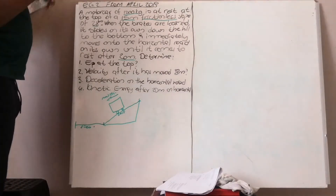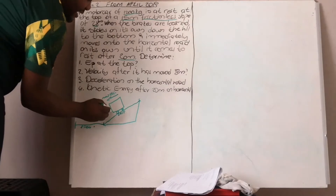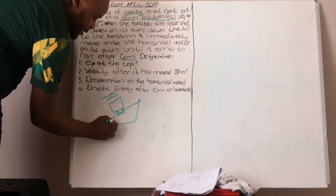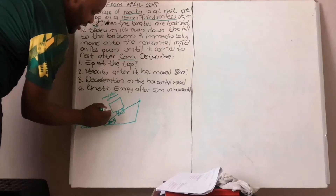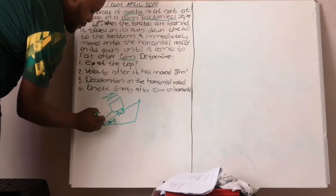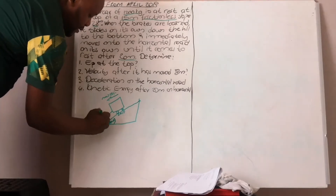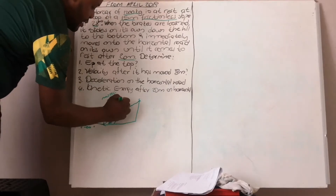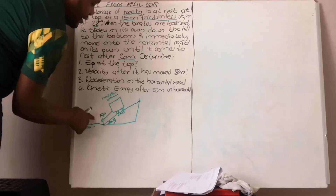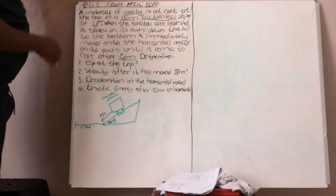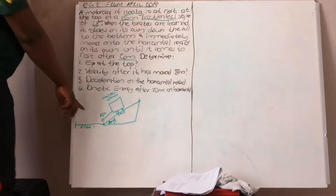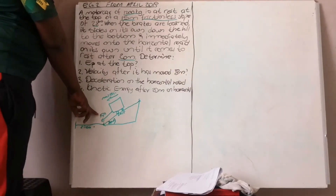Since the object is on an inclined plane, the angle is 28 degrees. When it moves, it is subjected to two forces: Fp, the force parallel to the plane, which acts downward along the incline.